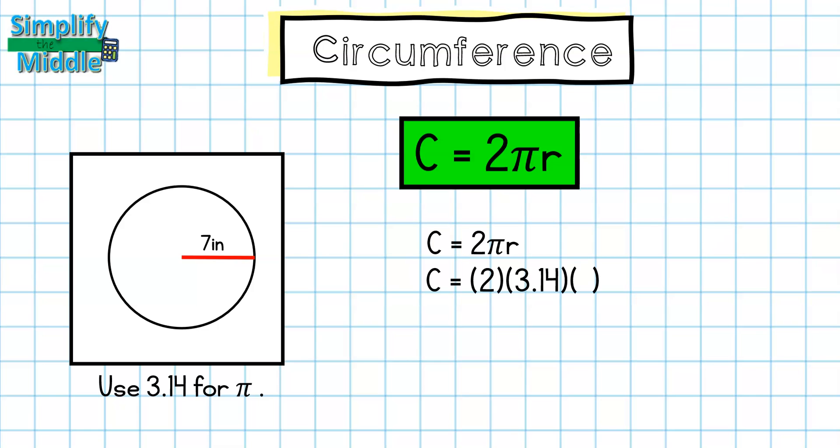Circumference equals two times pi times R. My second step is to substitute the numbers into the formula. So circumference equals two times 3.14, which is what we're using for pi, and then my radius was seven. My third step is to multiply everything together. I am going to be using the approximation symbol because I'm rounding here for pi. This is not exactly pi, it's an approximation.